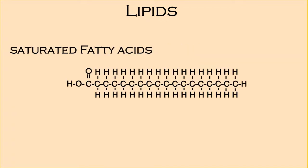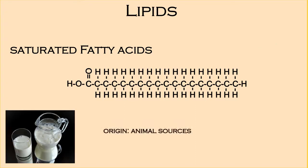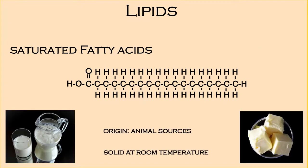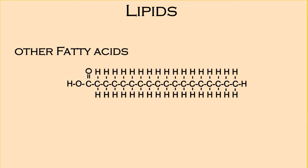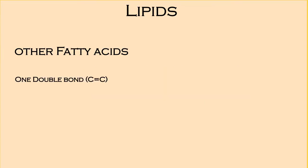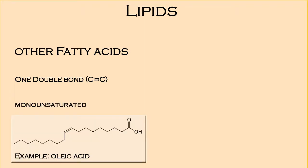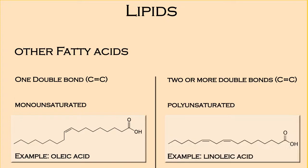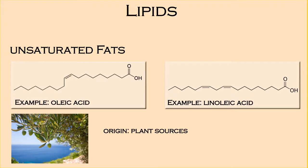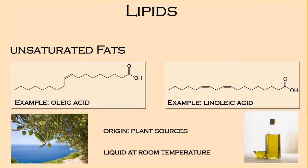Saturated fatty acids have single bonds between the carbon atoms. They originate from animal sources and are solid at room temperature. Other fatty acids don't bind their maximum number of hydrogens due to double bonding between carbon atoms in the chain. Fatty acids with one double bond are monounsaturated, while those with two or more double bonds are polyunsaturated fatty acids. Unsaturated fats originate from plants and are liquid at room temperature.